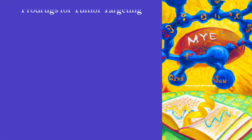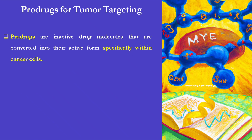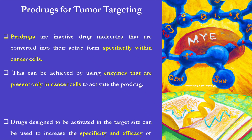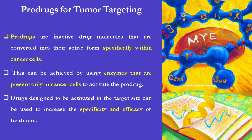Another useful method is the incorporation of prodrugs for tumor targeting. Prodrugs are inactive drug molecules that are converted into their active form specifically within cancer cells. This can be achieved by using enzymes that are present only in cancer cells to activate the prodrug. Drugs designed to be activated at the target site can be used to increase the specificity and efficacy of treatment.